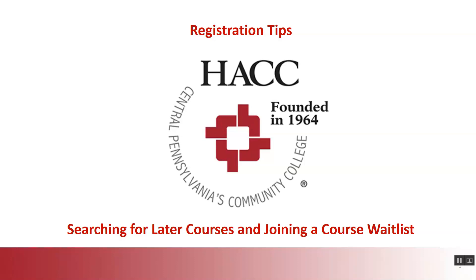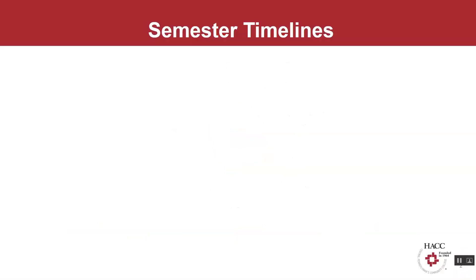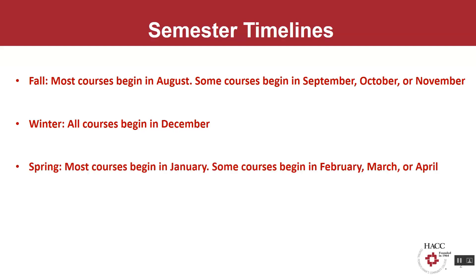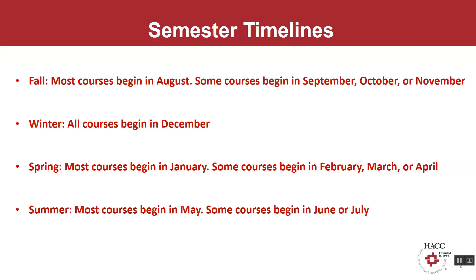HACC has fall, winter, spring, and summer courses. Typically fall classes begin in August and late start classes begin in September. There are also limited courses that start in October and November. Winter is a four-week term and the only option is for classes to start in December. Spring courses begin in January with late start classes beginning in February, plus a limited number of courses that start in March and April. And lastly, for the summer semester, most classes start in May, but there are some June and July start dates too. So let's search for these courses with later start dates.